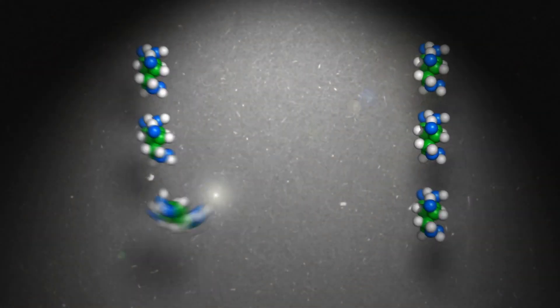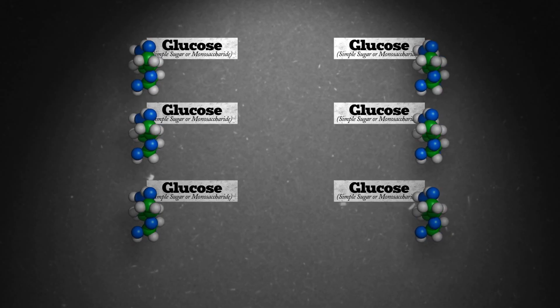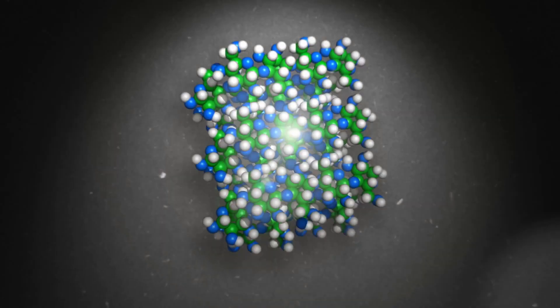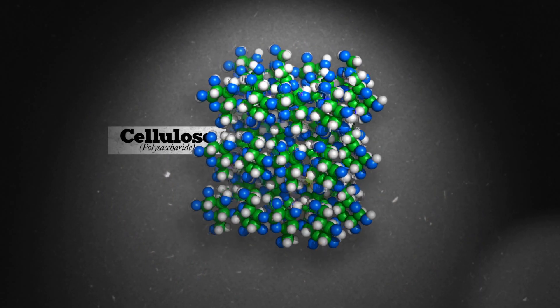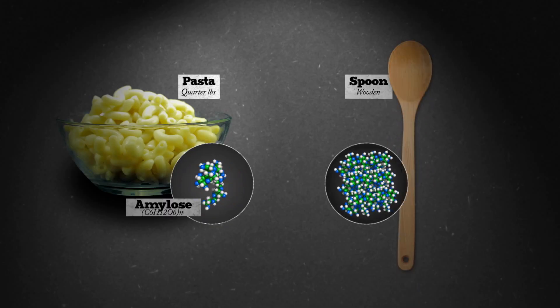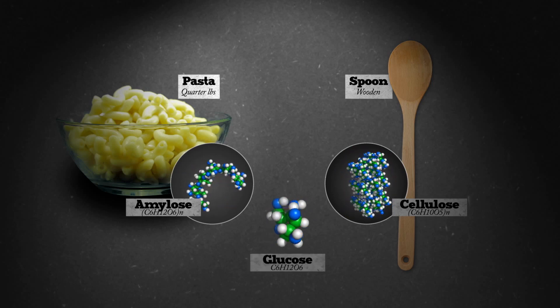Turns out if you break some bonds, amylose is made up of smaller molecules of glucose, a simple sugar. If you take a bunch of these same glucose molecules and rearrange them in a different way, you get cellulose, which is what plants are made of. So, while this piece of pasta made of amylose and this wooden spoon made of cellulose look vastly different, they're both essentially made of the same molecules, just stuck together differently.